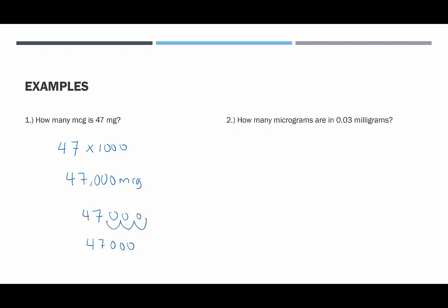How many micrograms are in 0.03 milligrams, or how many micrograms are in three hundredths of a milligram? So this would be 0.03 times 1,000 to convert it to micrograms from milligrams. That's moving the decimal point three places to the right, so that would be 1, 2, 3. We're going to fill in a gap in this zero, and we would end up with 30 micrograms. So three hundredths of a milligram is equivalent to 30 micrograms.